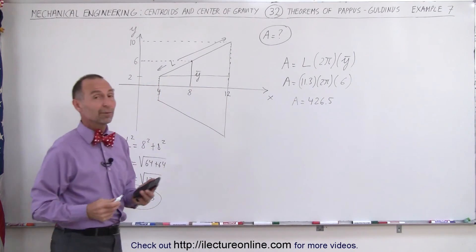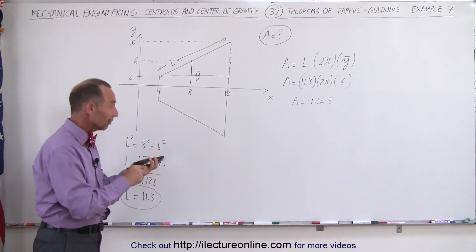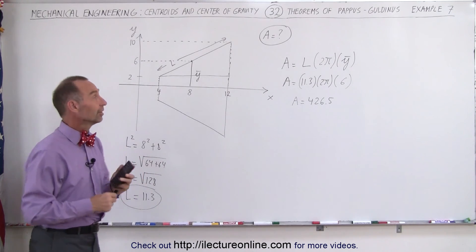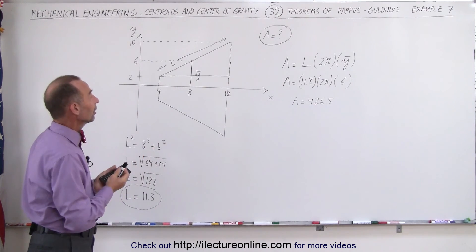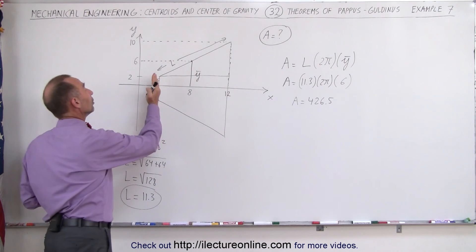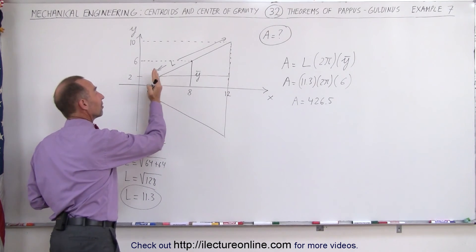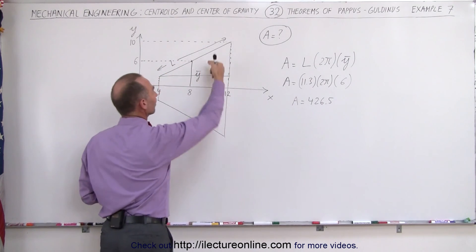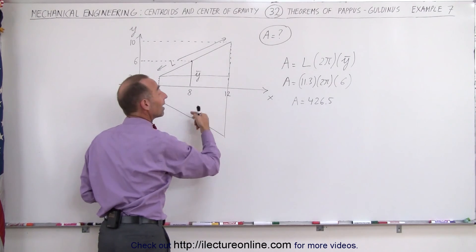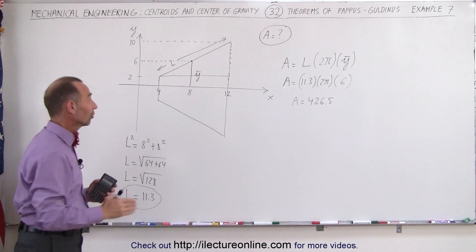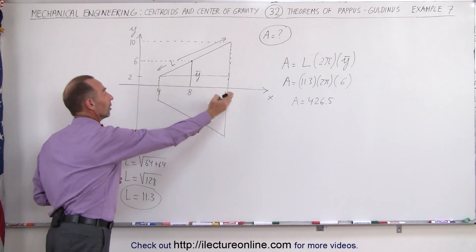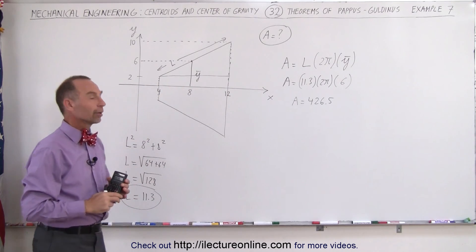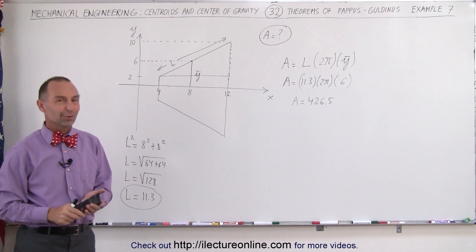If these are centimeters, that would be square centimeters. If these were meters, that would be square meters. But that's how we find the surface area of a truncated cone, not including the area of the flat portion at the top and not including the area of the base. Simply the area of the side, and we have to make that distinction. So it does not include the two vertical sides of that particular truncated cone. And that's how we do that.